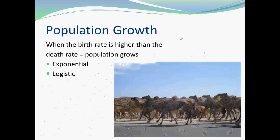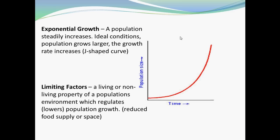Population growth occurs when the birth rate is higher than the death rate. There are two types: exponential and logistic. Exponential growth is when a population steadily increases under ideal living conditions, and when graphed, it makes a J-shaped curve because the population keeps growing over time. However, populations can be limited by limiting factors — living or nonliving properties that regulate or lower population growth, such as limited food supply or limited space.